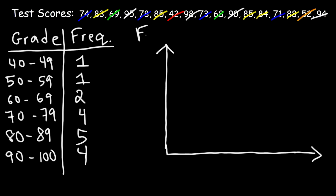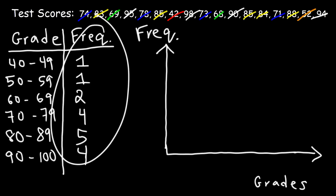On the y-axis, we're going to have the data that corresponds to the frequency. On the x-axis, we're going to put the grades, which are the... Actually, I take that back. The grades are the independent variables. The dependent variables are the frequencies. The dependent variables are always on the y-axis. The independent variables are always on the x-axis. Can't believe I almost mixed that up.